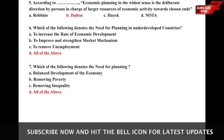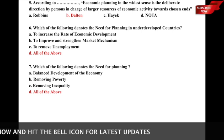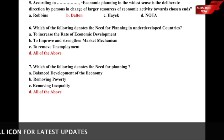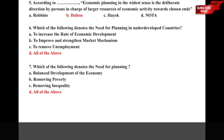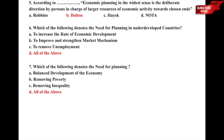Question 7: Which of the following denotes the need for planning? The options are a) balanced development of the economy, b) removing poverty, c) removing inequality on both income and wealth fronts, or d) all of the above. The correct answer is option d) all of the above.